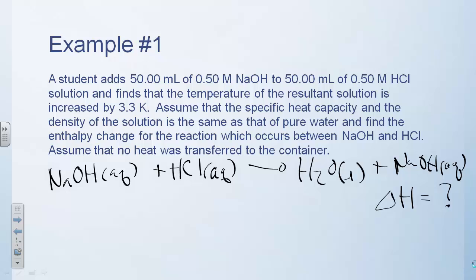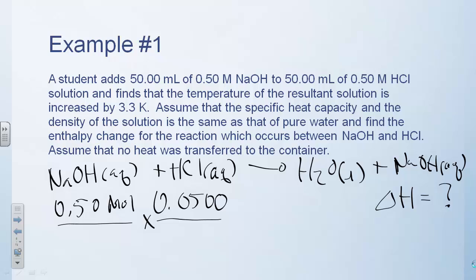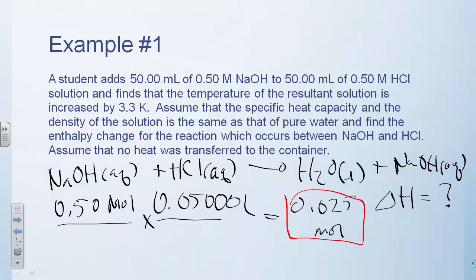Why do we know we're talking about delta H? Because the whole theme of the day is constant pressure scenarios. The first thing we might wonder about is how much reaction we are doing. We know we're mixing 50 mils of 0.5 molar solution, so we have 0.50 moles per liter times 0.0500 liters, and we find we have 0.025 moles of reaction. We have the same amount of sodium hydroxide and hydrochloric acid, so there are 0.025 moles of reaction going on.